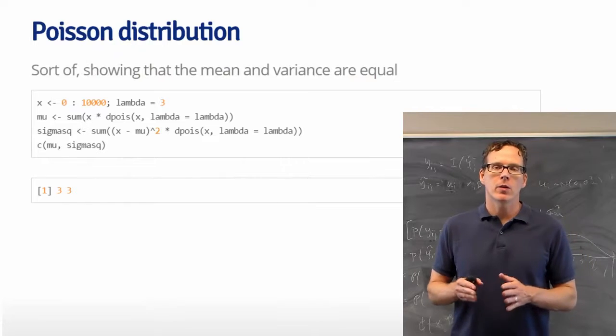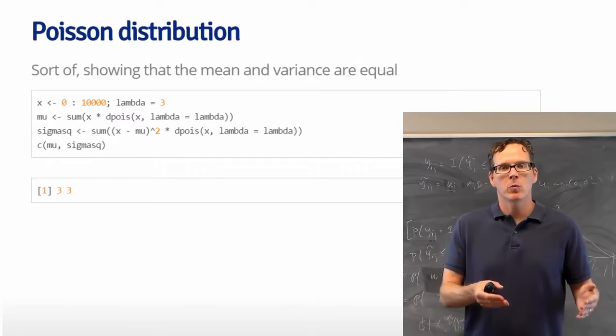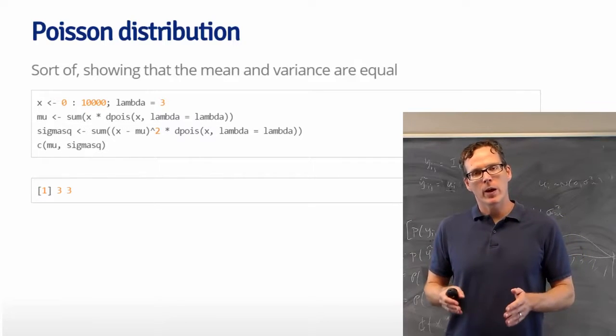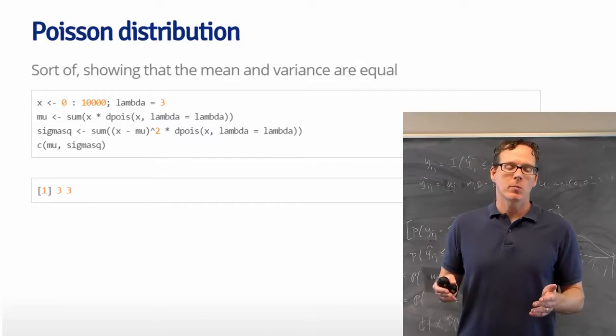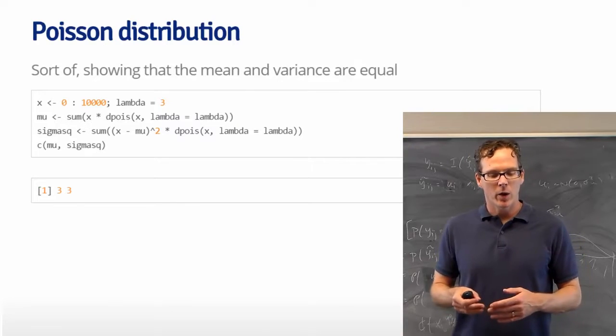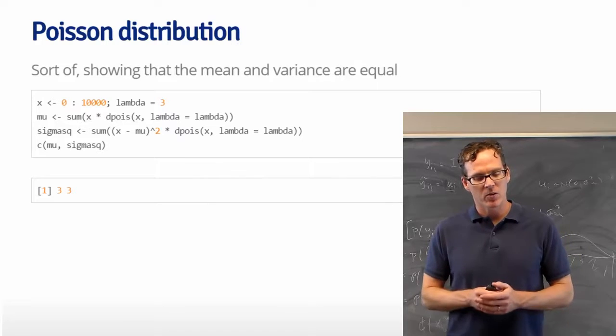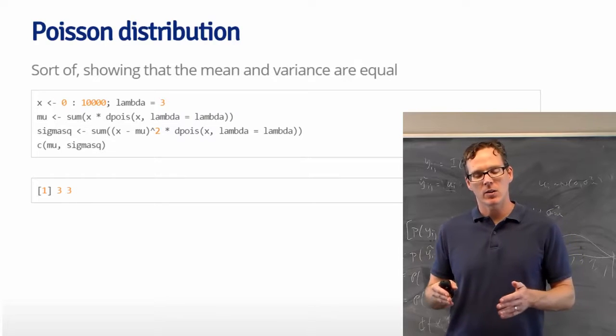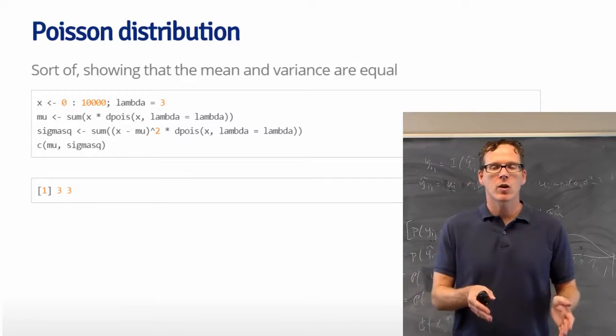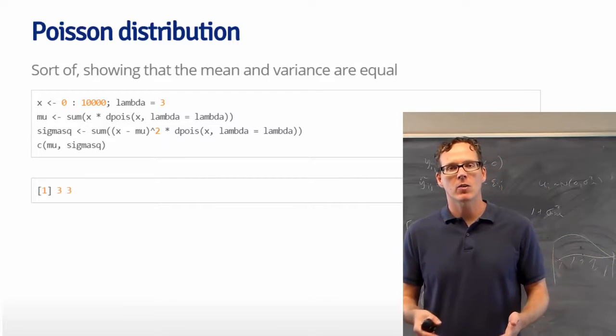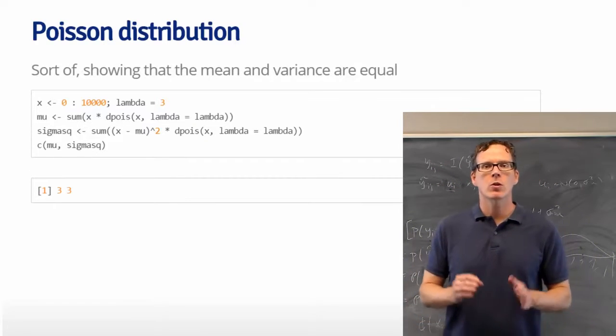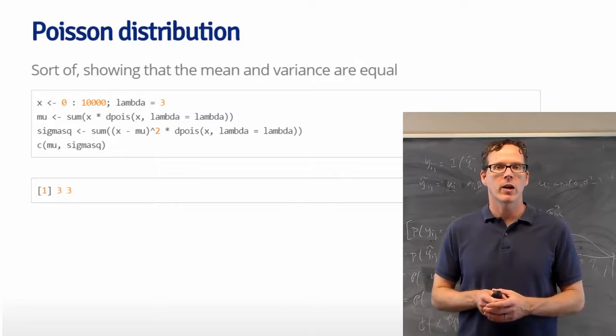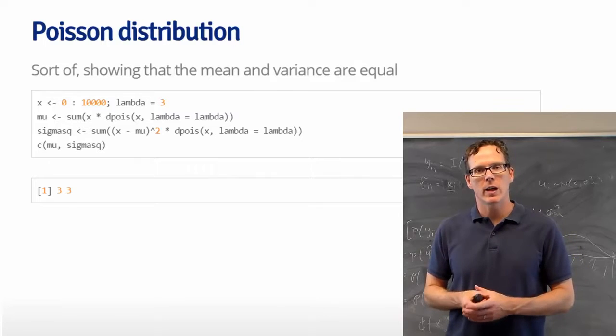We can't actually show in this class the mathematics that the mean and the variance are equal theoretically. So we could do that by simulation. Or I actually try to show it using the density and summing up the density in the right way. So if you're interested, try that experiment and it'll prove to you that the mean and the variance are equal. Try it for a bunch of different scenarios. Or you could just believe me. Or you could take, for example, Mathematical Biostatistics Bootcamp 1 or 2, my other Coursera classes, where we cover how to do the actual mathematics for this.